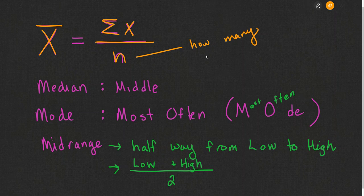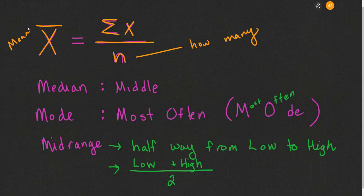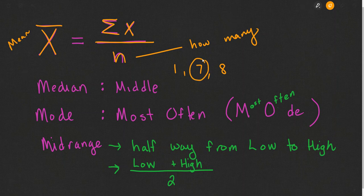The median average is the number that appears in the middle. If we listed all the numbers from low to high and find the number that's directly in the middle, that number is called the median average. It's easy to find the median if there's an odd number of pieces. For example, if we had 1, 7, 8 — there are three pieces, so the number in the middle when put in order from low to high is clearly the 7.